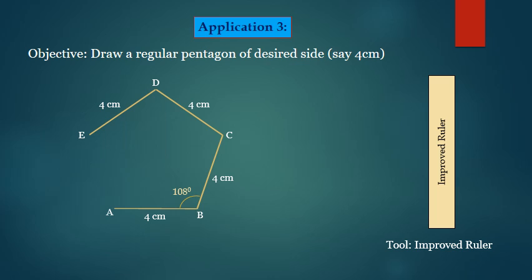Fourth operation is draw line DE. Again the angle CDE remains 108 degrees. And fifth operation is draw line EA, which is closing line of 4 cm. The accuracy is very great and all integral angles will remain as 108 degrees.